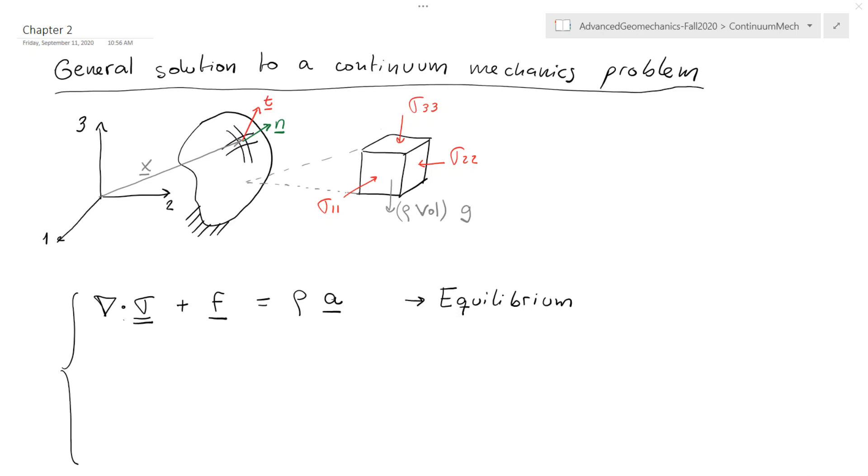The general solution of a problem in continuum mechanics is going to depend on three equations. Let's go with the first one: this is the equilibrium equation for a solid in three dimensions. To be in equilibrium, we have to satisfy what are called the Cauchy's equilibrium equations.